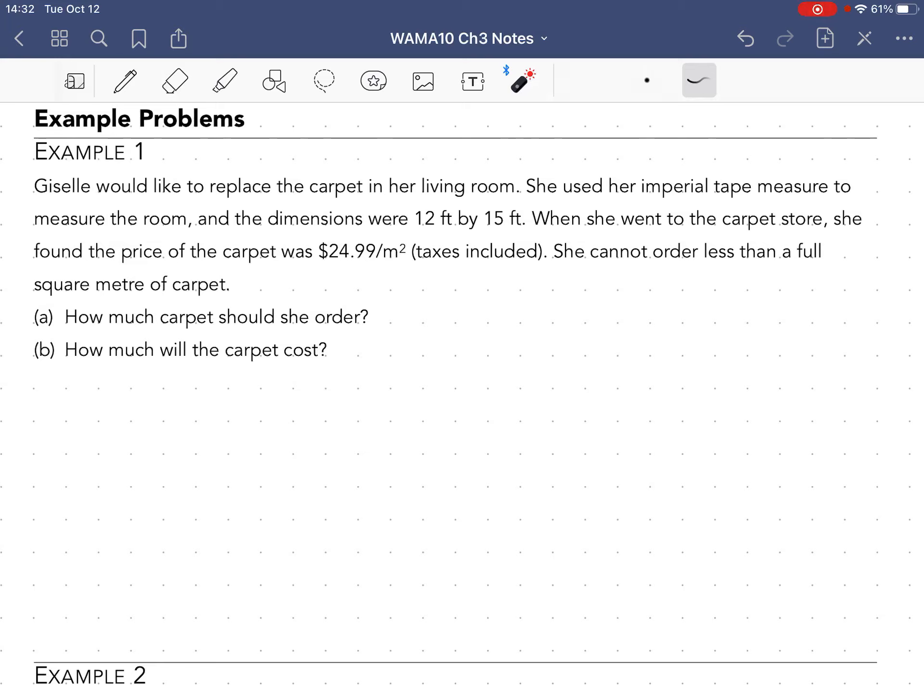All right, let's take a look at example problem number one. So we've got Giselle would like to replace the carpet in her living room. She's an imperial tape measure, of course, because lots of people have imperial tape measures just kicking around, to measure the room and the dimensions were 12 feet by 15 feet.